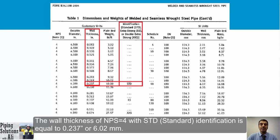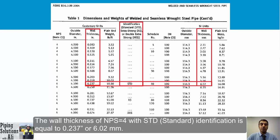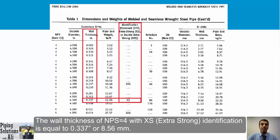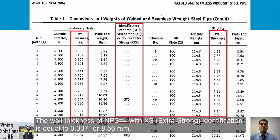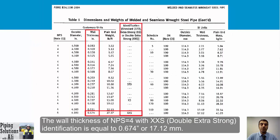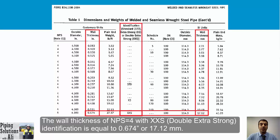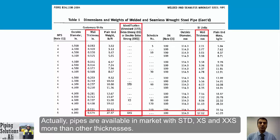For NPS 4, the wall thickness with STD identification is 0.237 inches (6.02 mm). With XS identification it is 0.337 inches (8.56 mm). With XXS identification it is 0.674 inches (17.12 mm). Pipes with STD, XS, and XXS are more readily available in the market because manufacturers maintained these production lines after other methods were introduced.